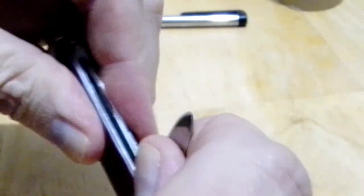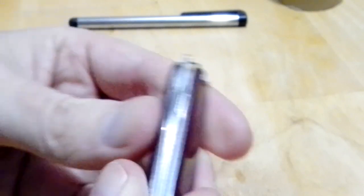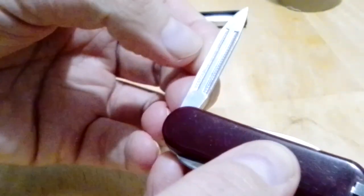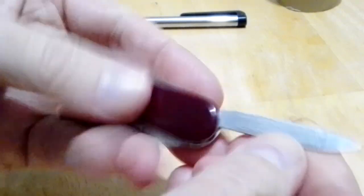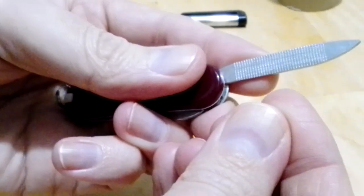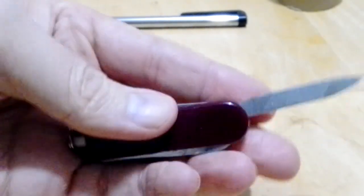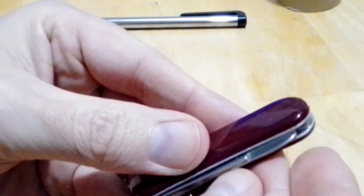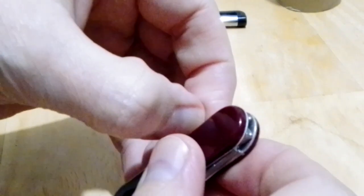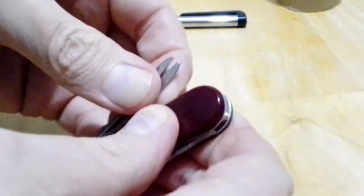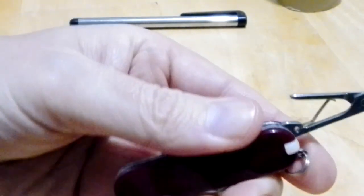It'll cut through stuff, so it's not totally useless. Then it's got a file on this side. It actually files, you can work on your nails or whatever. It's a good little knife to have if you get a big chunk out of your fingernail or something. You can cut off a piece with the scissors and then you can file the rest of it.